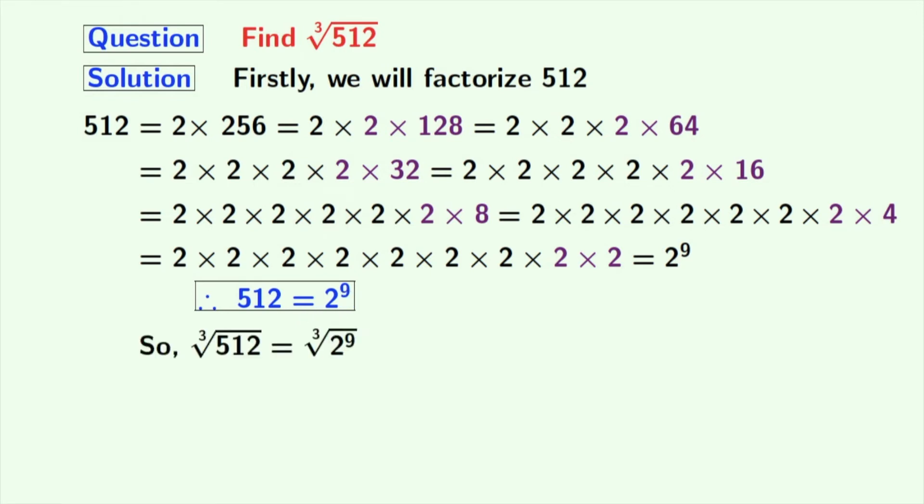Now we will take cube root on both sides. Doing that we get cube root of 512 is equal to cube root of 2 power 9. Now, cube root can be written as power 1 by 3. So we will write it as 2 power 9 whole power 1 by 3. This can be written as 2 power 9 times 1 by 3.